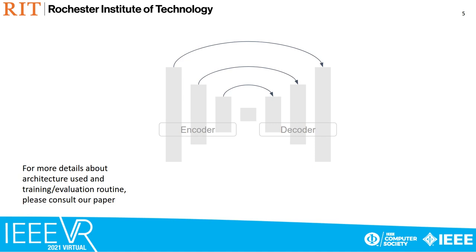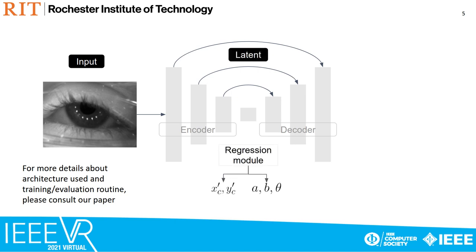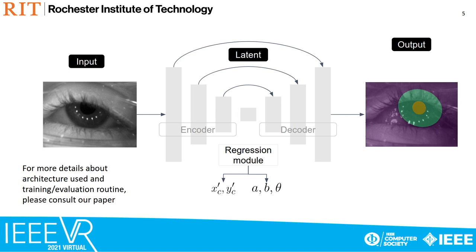LSEC proposes leveraging encoder-decoder convolutional neural network architectures. The encoder takes an eye image as input and passes it through a series of convolutional layers while downsampling its spatial extent. The output of the encoder is a latent representation of the image, which is passed through a regression module to predict pupil and iris ellipse parameters. The latent representation is then passed to the decoder module, which progressively increases its spatial extent while performing convolutional operations.